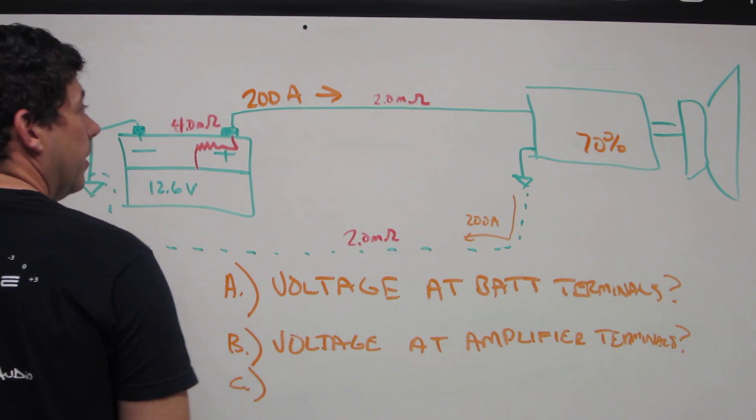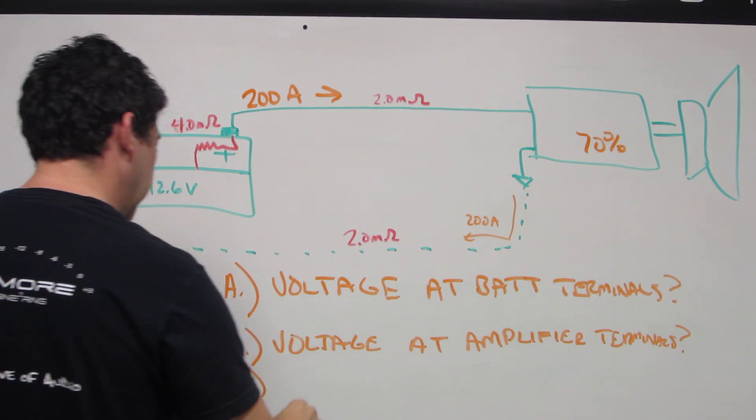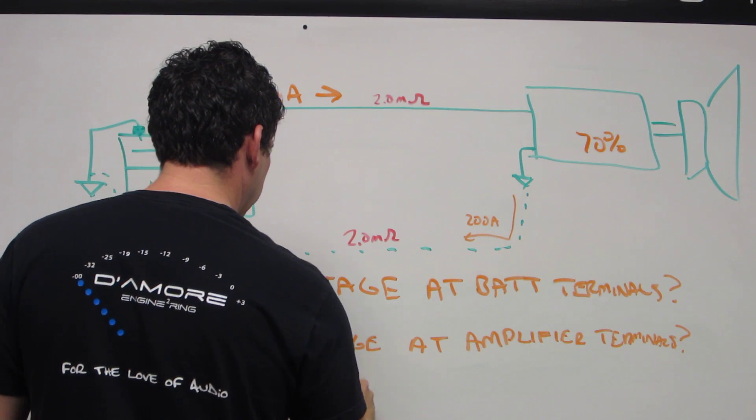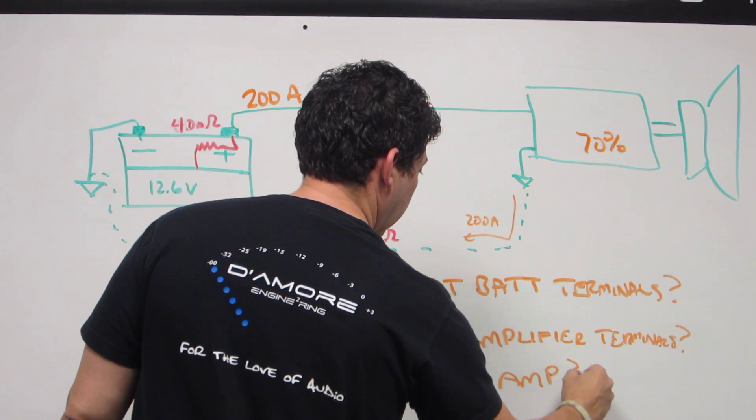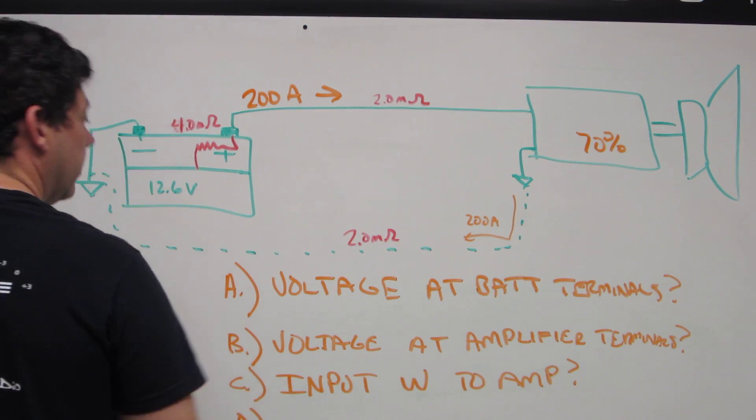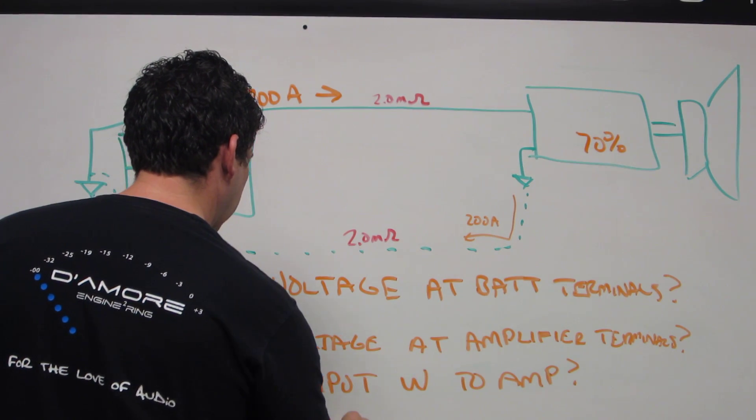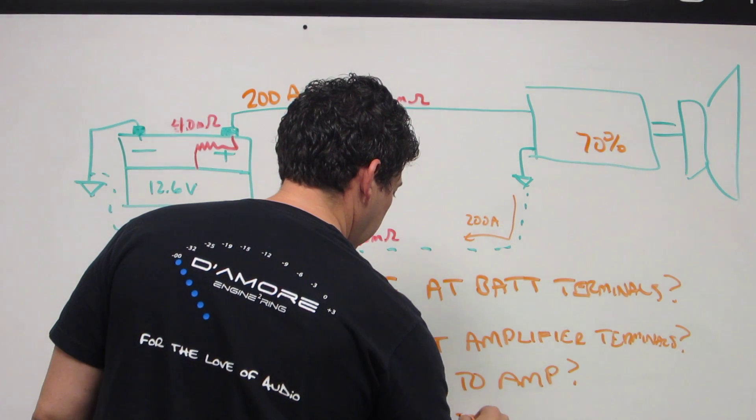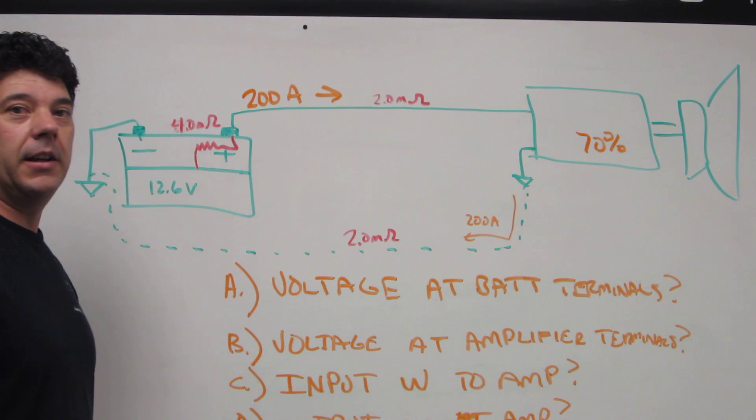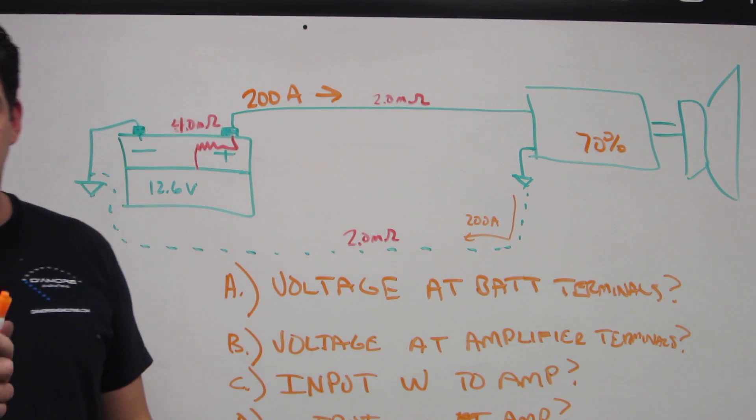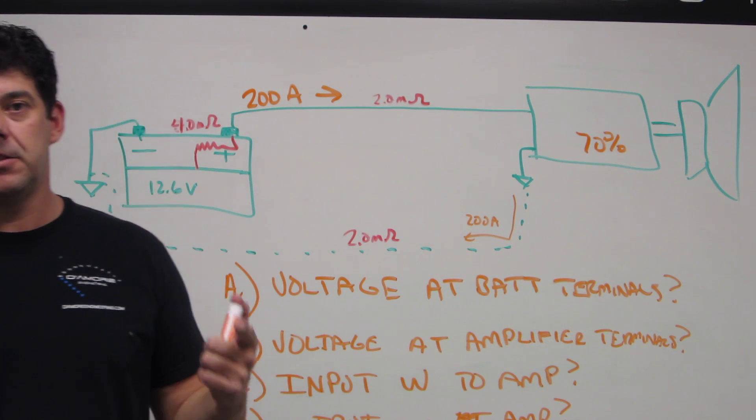And then C, once we figure out all that and we know what the current is going in, then how much power is going into the amplifier? Input power to amp. And D, assuming 70 percent efficiency for this amplifier, then what is the output power? There you go. That's this week's homework assignment. It should be a fun one and I look forward to seeing your comments and your results on it. See you next time.